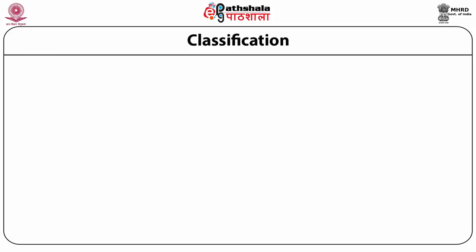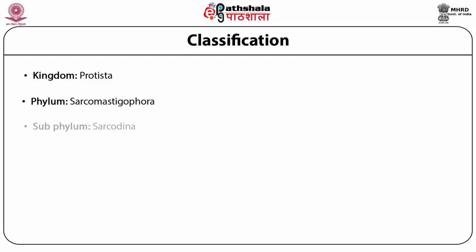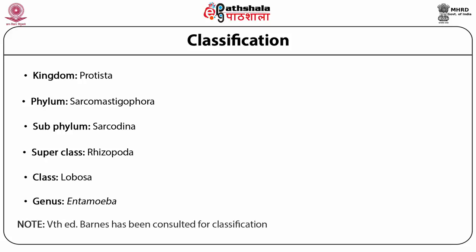Classifying Entamoeba: it belongs to Kingdom Protista, Phylum Sarcomastigophora, Subphylum Sarcodina, Superclass Rhizopoda, Class Lobosa — meaning it has lobo-type pseudopodia. This classification is taken from the 5th edition of BOTS.